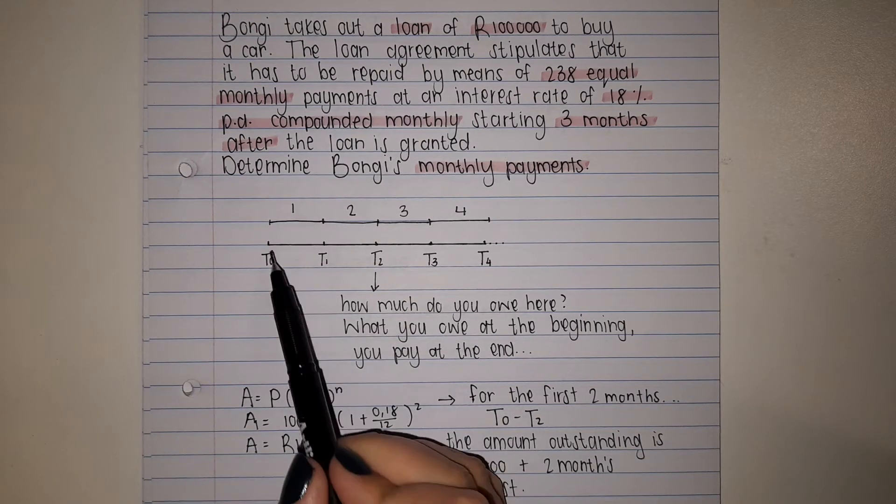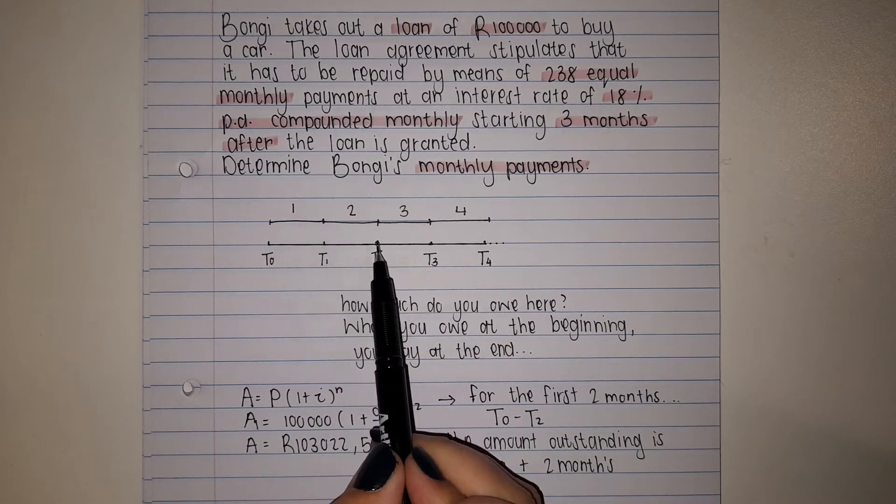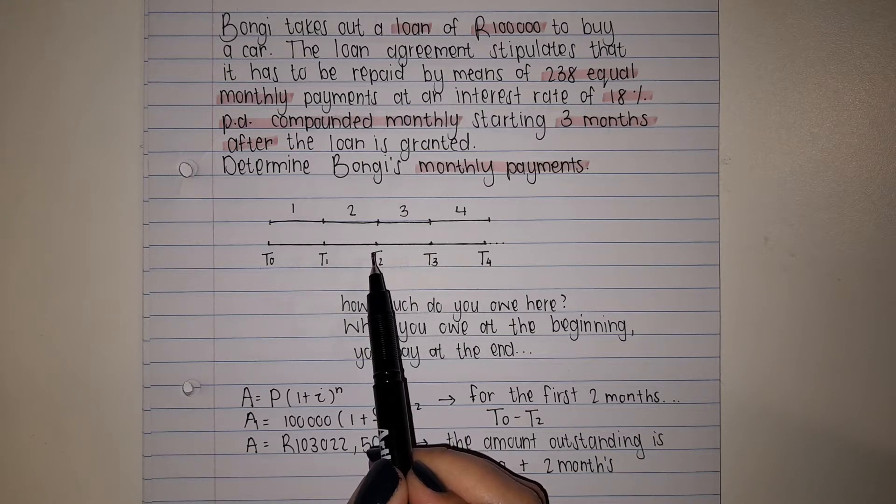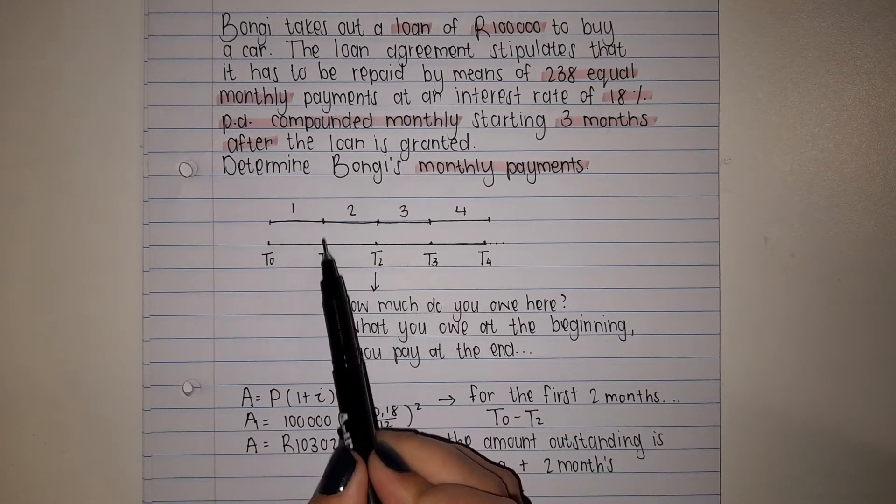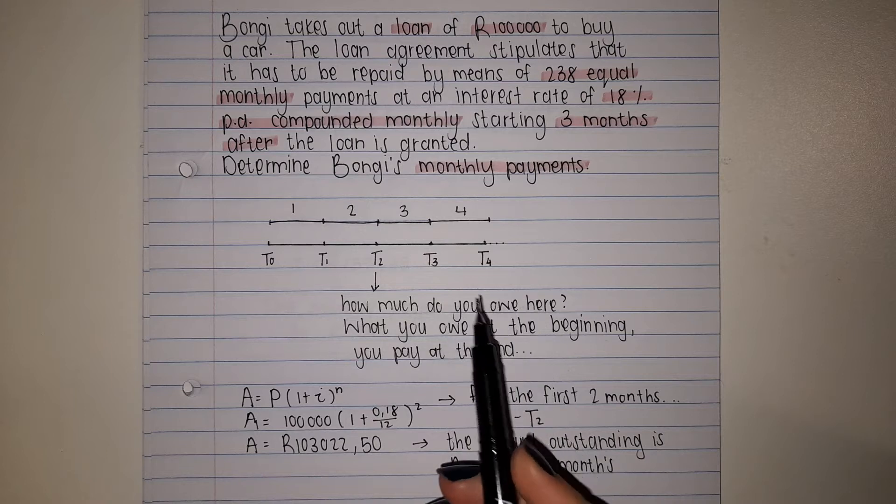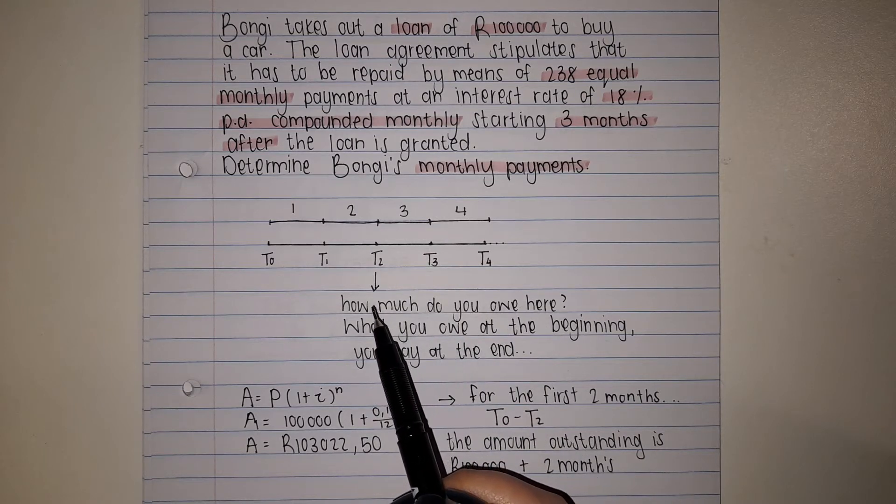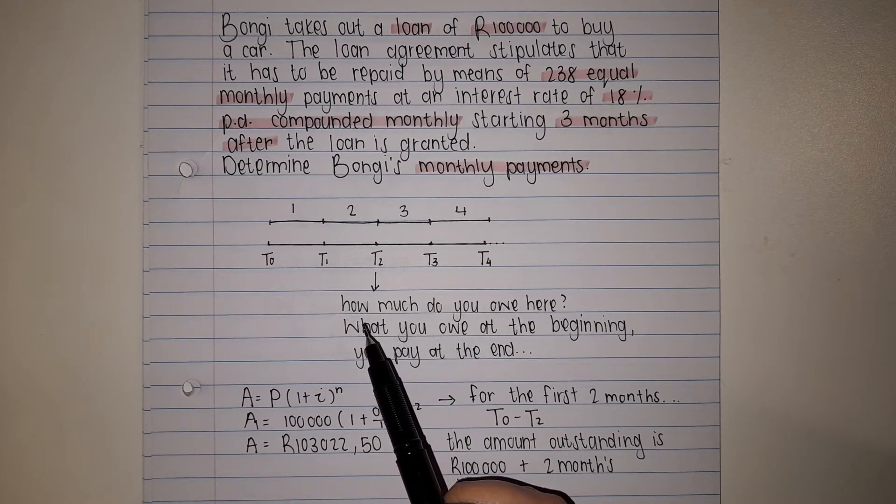For the first two months there's been an interest rate, which means it's been earning interest that she needs to pay back. It doesn't mean she gets the first two months interest free.